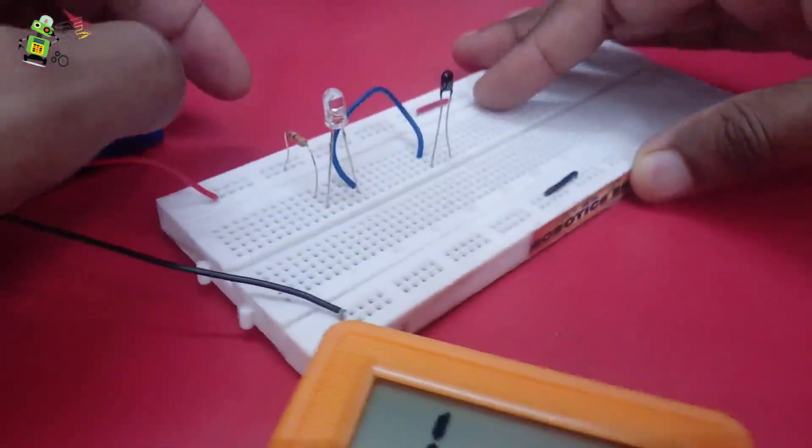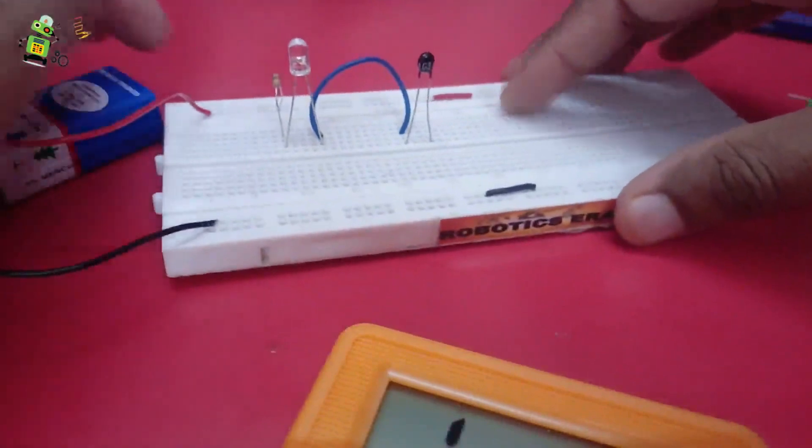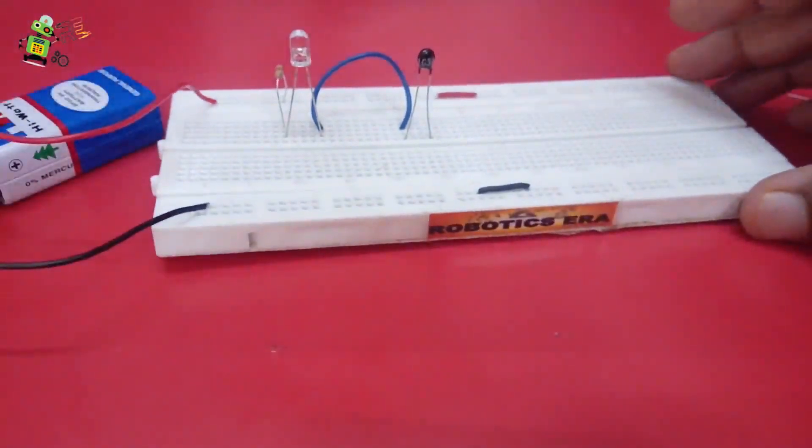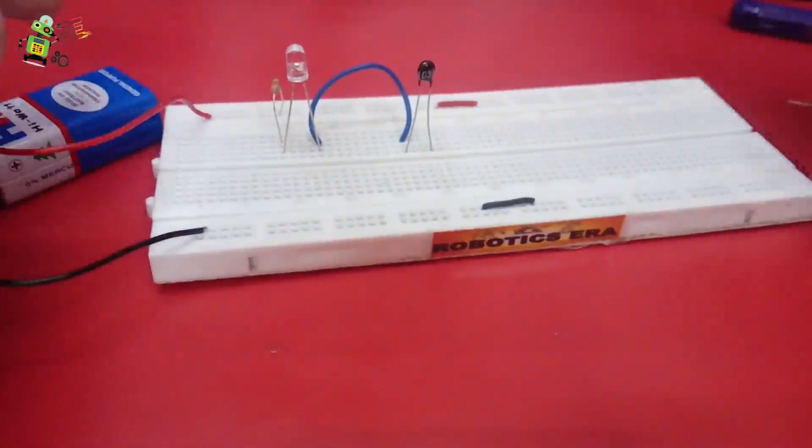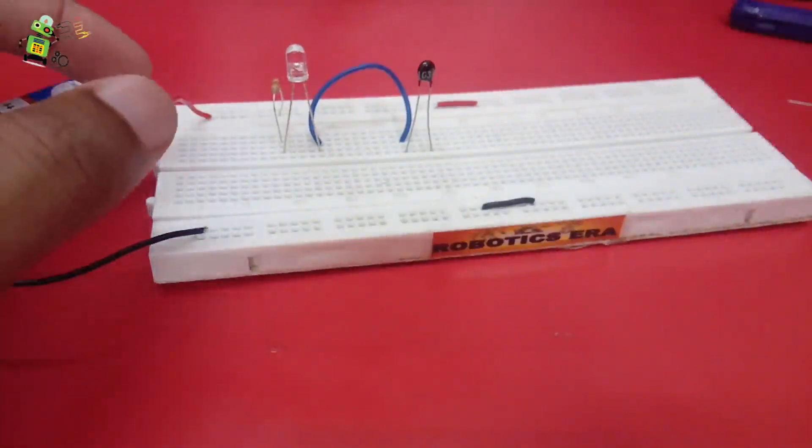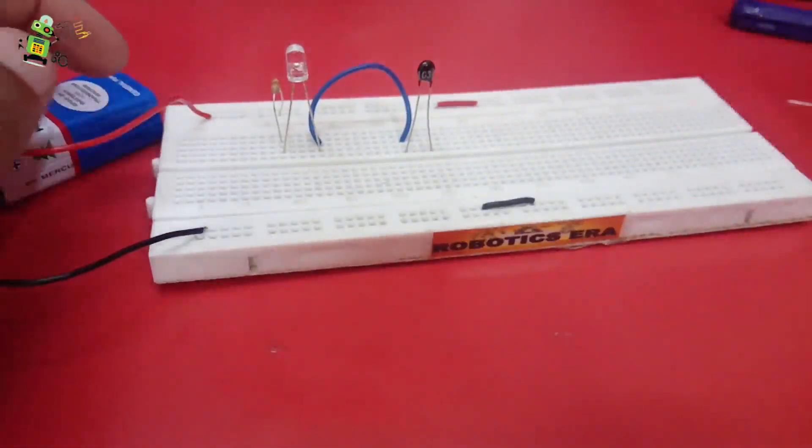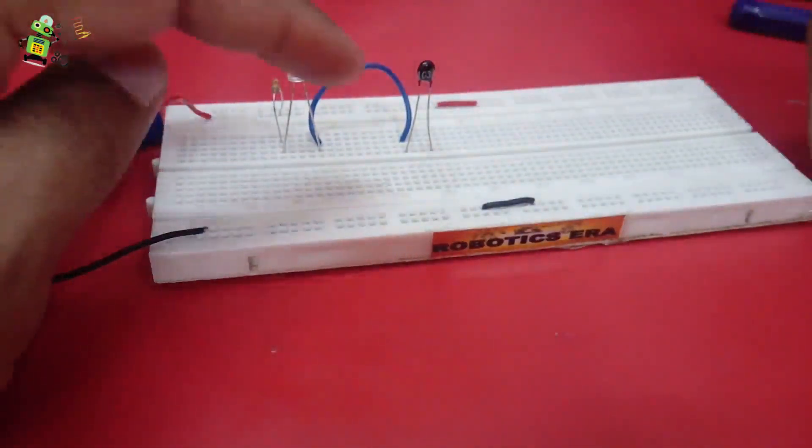Okay, as you can see this. Now what you have to do? You have to connect another wire from negative to the negative of the thermistor.